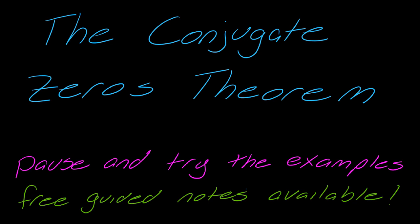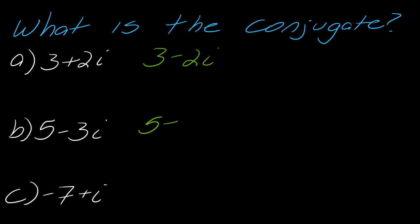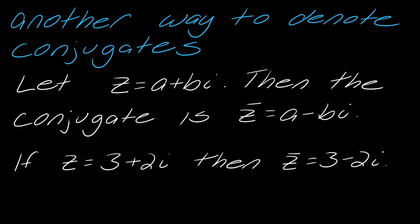In this video we're going to talk about the conjugate zeros theorem. The concept of the conjugate: if you have two terms, the conjugate is found by flipping the sign in the middle. So 3 plus 2i has conjugate 3 minus 2i, 5 minus 3i has conjugate 5 plus 3i, and negative 7 plus i has conjugate negative 7 minus i.